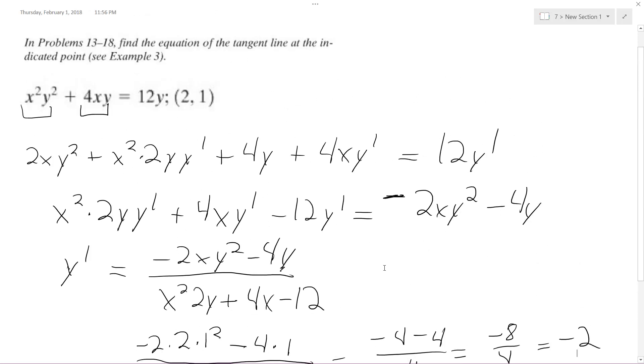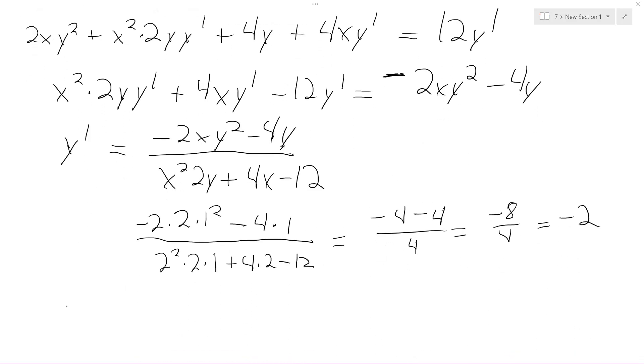So 2 comma 1 is the point I need. So y minus y1 is equal to m times x minus x1. So I'm going to have, moving this over, y minus 1 is equal to negative 2 times x minus 2.